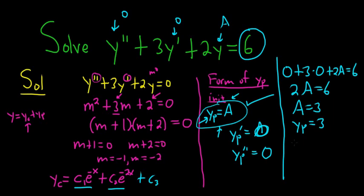Good stuff. Now we're ready to write down the final answer. The final answer is y equals yc plus yp. So that's y equals c1 e to the negative x plus c2 e to the negative 2x, and then plus yp, which we said was three. And so that's the final answer.